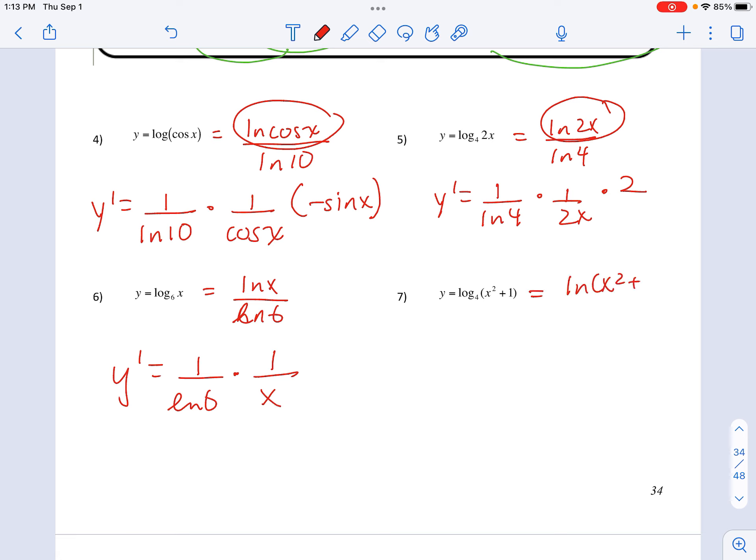And lastly, rewrite it using change of base. Derivative is 1 over x squared plus 1 times 2x. If you just memorize the rule, you would go straight to here, and that's fine.